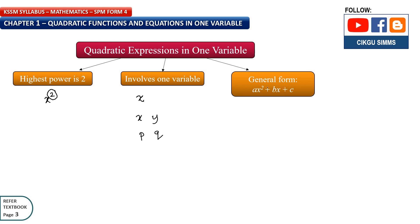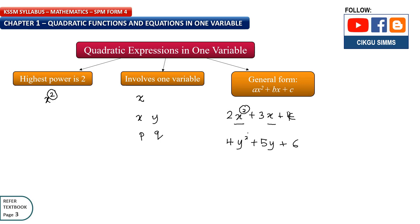The general form is ax squared plus bx plus c, where a, b, and c are all numbers. For example, 2x squared plus 3x plus 4 — the highest power is 2 and it involves only one variable, which is x. Another example: 4y squared plus 5y plus 6 — highest is 2 and also one variable.